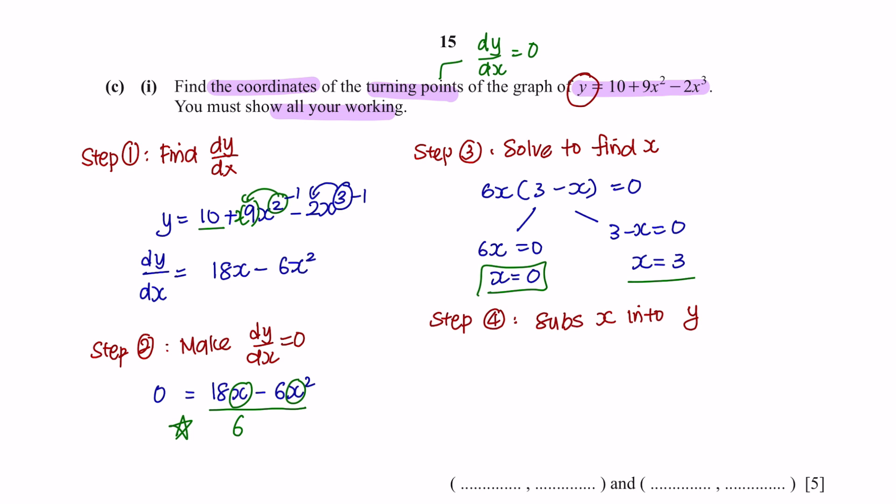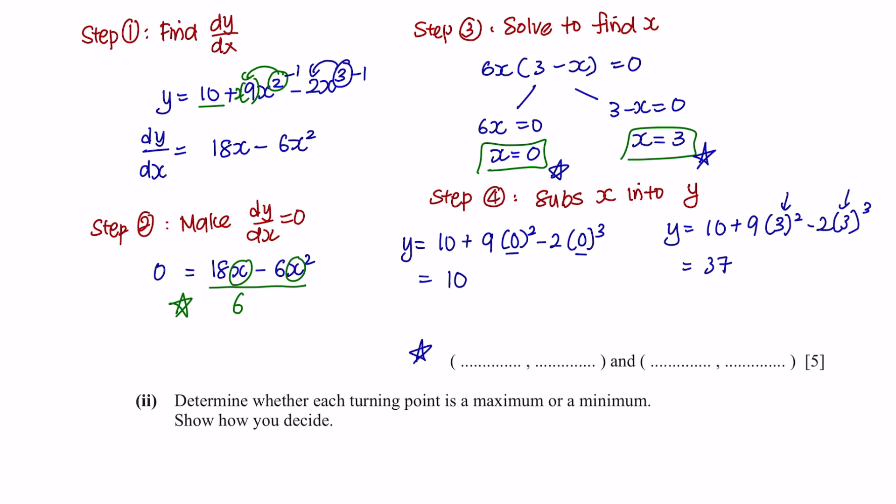And the values of x would be x equals 0 and x equals 3. Now we're going to substitute the value of x into our equation y. The first y, substituting x equals 0 gives us y equals 10. And for the second y, when we substitute 3 into the equation, we will get 37. So the coordinates are (0, 10) and (3, 37).